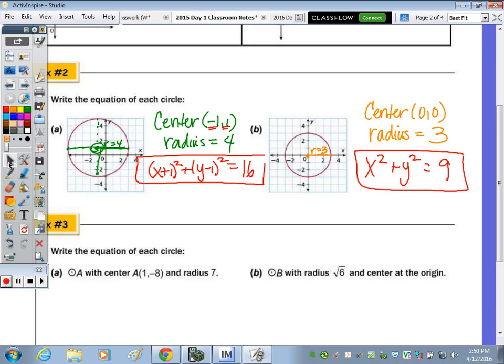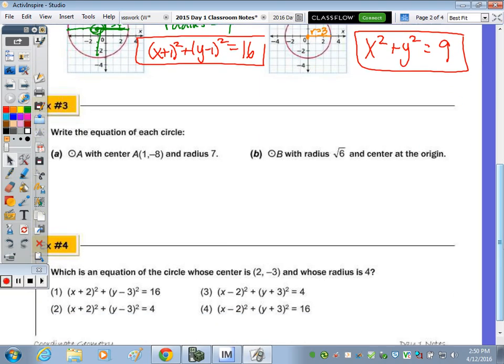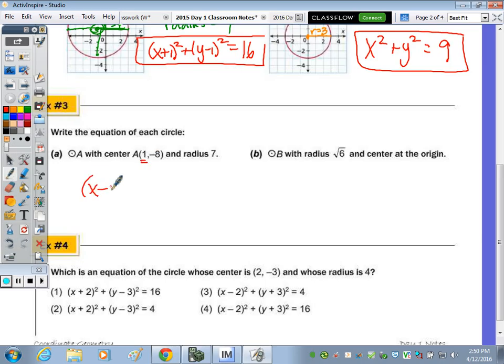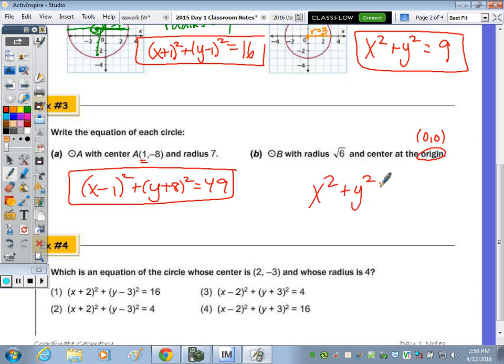In example 3, it's the same idea, they just don't give you a picture, they give it to you in words. So I have circle A with center A, remember every circle is named based on the center. So if it's a positive 1, it's going to be x minus 1, it's the opposite. And then plus y subtract a negative turns to positive 8 squared and then 7 squared is 49. Write the equation of circle B with a radius of square root of 6, it's centered at the origin which is 0, 0, so it's just x squared plus y squared, but what's it equal to? What's the radius squared? 6. So if you were to square radical 6, it just gets rid of the radical symbol and it's just 6.